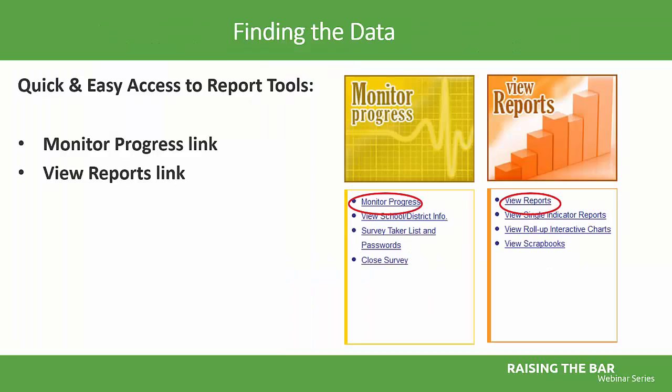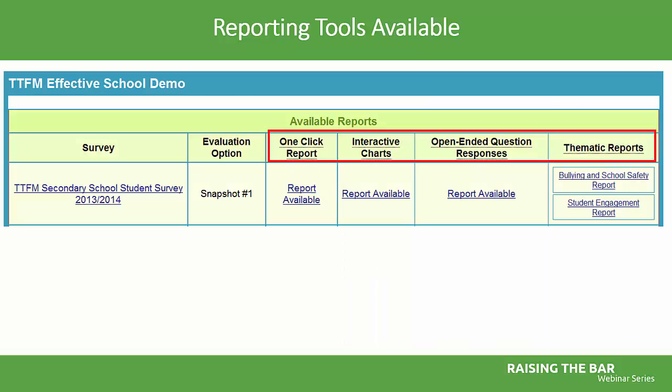You can access your reports from the Tell Them For Me homepage from two different ports — Monitor Progress or View Reports. Clicking on one of those options will take you to your own dashboard showing what reports are generally available. Please note that not all reports may be available to you; it depends on the measures chosen by your jurisdiction, whether there were any open-ended questions, and the size of the reporting population. Each one of the tools you see here can be valuable in exploring your data.